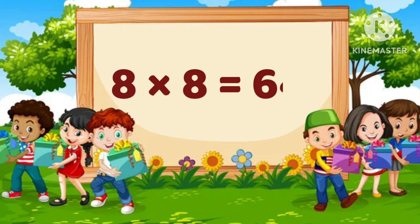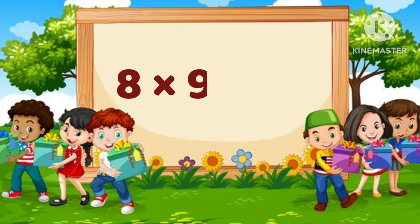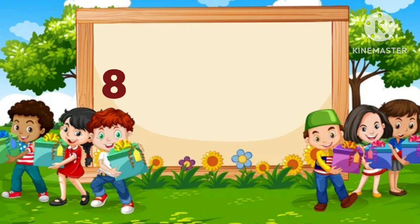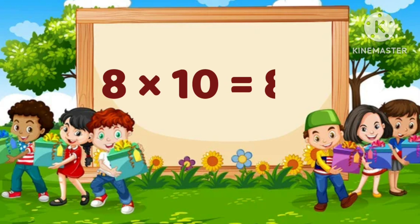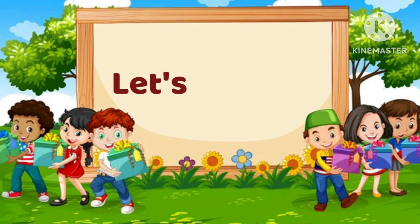8 times 8 is equal to 64. 8 times 9 is equal to 72. 8 times 10 is equal to 80. Now, let's repeat the table of 8.